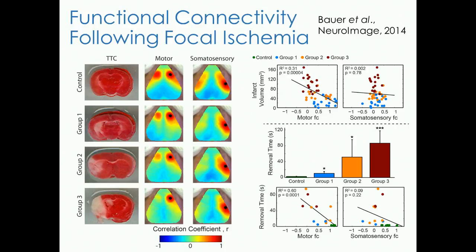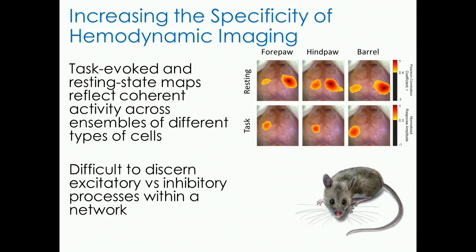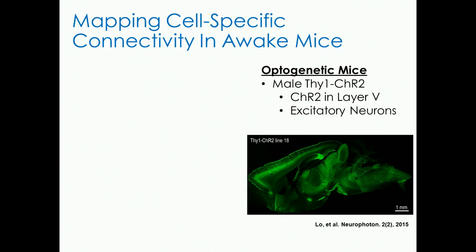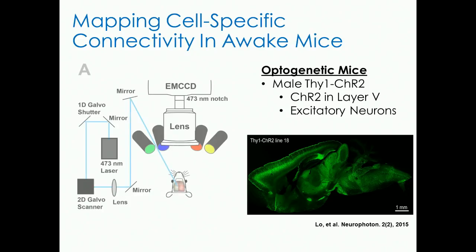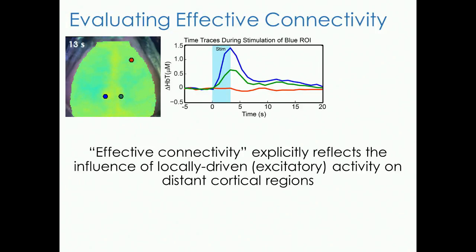I want to switch gears and talk about what we've been doing more recently, which is increasing the specificity of hemodynamic imaging. Task-evoked and resting state maps reflect coherent activity across many different cell types, making it difficult to discern excitatory versus inhibitory processes within a network. Optogenetic approaches are very natural for probing local and global brain circuitry. We use off-the-shelf mice expressing channelrhodopsin in excitatory neurons, primarily in layer 5, and the simplicity of our system makes it amenable to incorporating galvos, mirrors, and lenses to scan laser beams over the head of the mice.